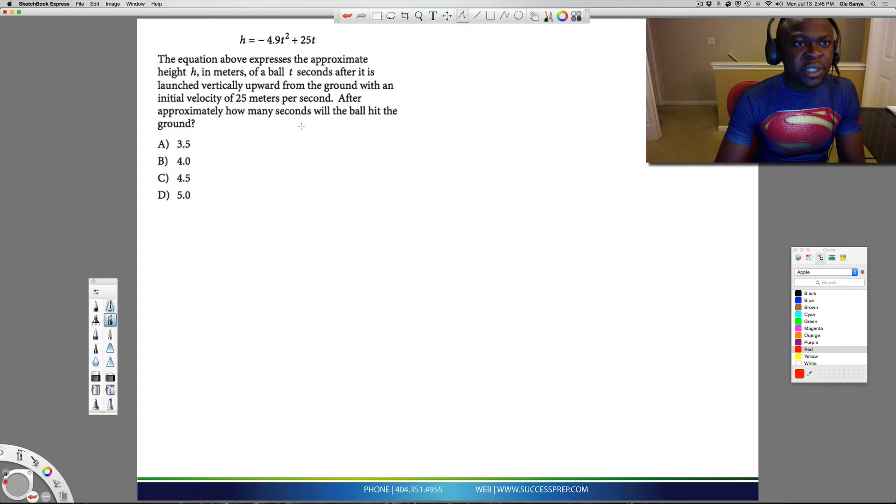So let's look into this question. It says the question above expresses the approximate height h meters of a ball t seconds after it's launched vertically upwards from the ground with an initial speed of 25 meters per second. After approximately how many seconds will the ball hit the ground?